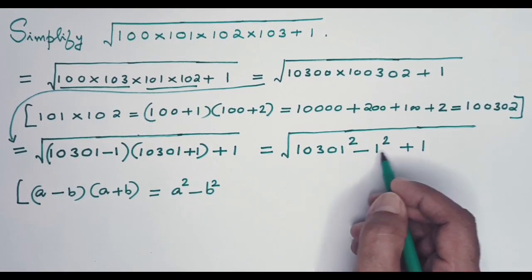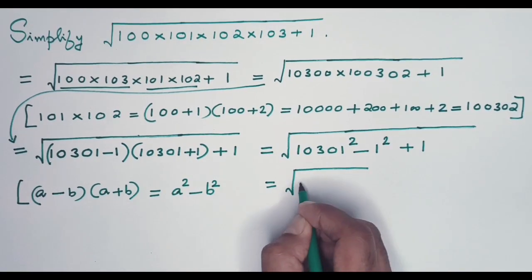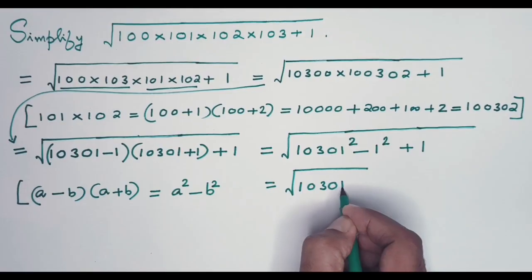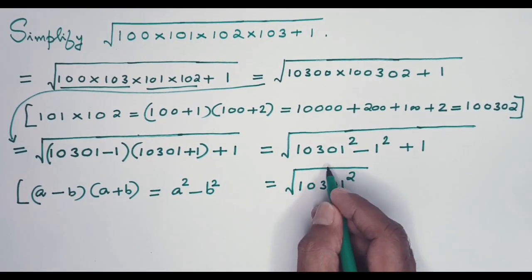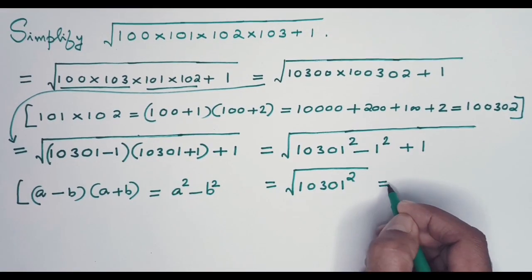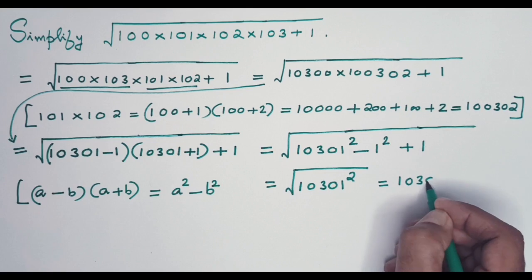And you get what? This term alone, which is 10,301 squared. Now look at this square root and squaring. They are inverse operations as you know, so they will cancel out and you will have finally 10,301.